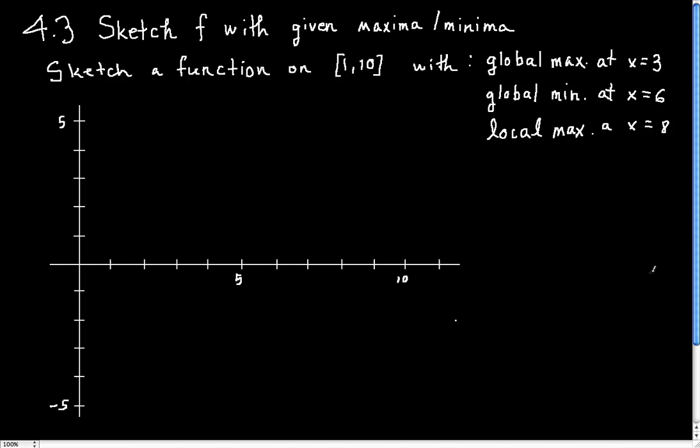This video is about how to sketch a function if you've been given specific locations for global and local maxima and minima. Here's our example. We want to sketch a function on the interval from x equals 1 to x equals 10 with three properties: a global max at x equals 3, a global minimum at x equals 6, and a local maximum at x equals 9.